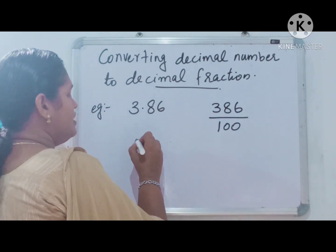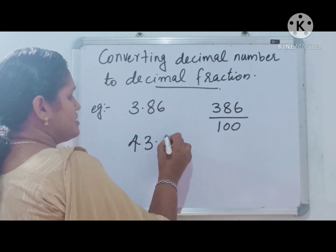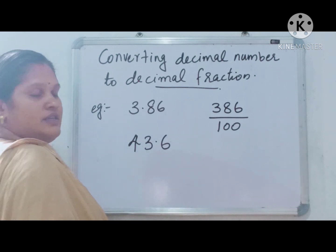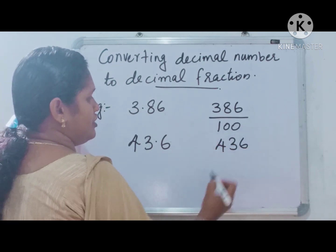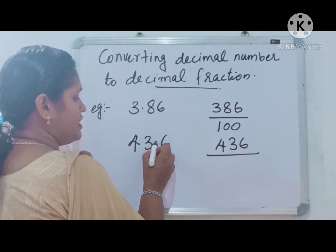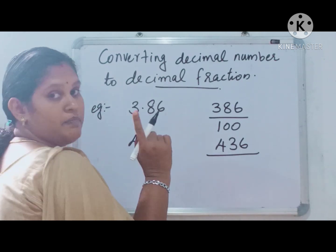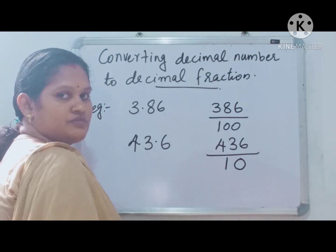Next example, 43.6. We can write 436 as numerator. How many places are here after decimal point? 1 place. So write 10.